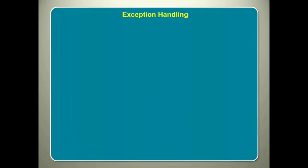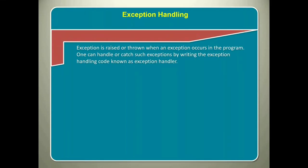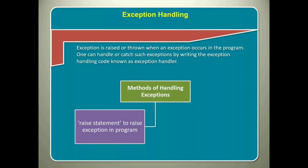Next, let's understand some of the key terms associated with it. Exception is raised or thrown when an exception occurs in the program. You can handle or catch such exceptions by writing the exception handling code known as exception handler. To do so, Python provides two methods: one, raise statement to raise exception in program and two, try accept statement for catching and handling the errors. Let us look into each of these in greater detail.